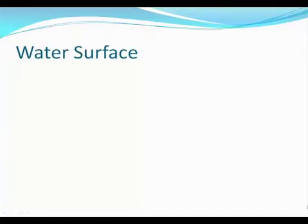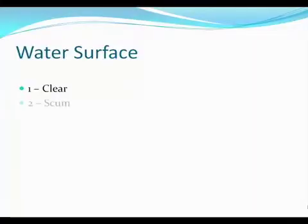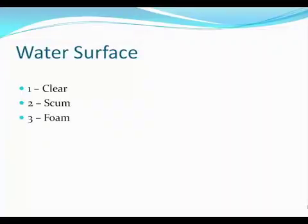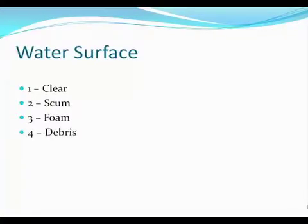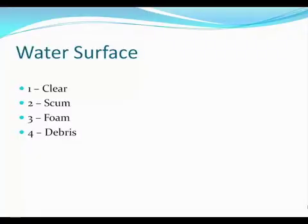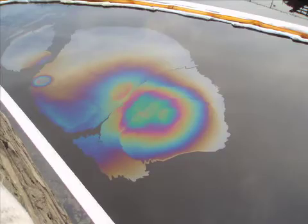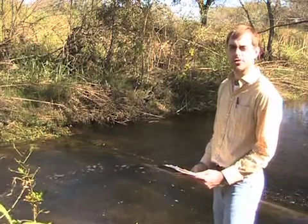The water surface field observation describes the appearance of the water surface. Record a 1 if the water surface is generally clear. Record a 2 if there is noticeable scum or film on the water surface. Record a 3 if there is foam on the water surface — this usually looks a lot like bath suds. Record a 4 if there is any floating debris, usually observed after a flood. Record a 5 if there is a sheen on the surface, which can be caused by oil or tree sap. The water surface here is considered clear as there is no scum, debris, or foam.